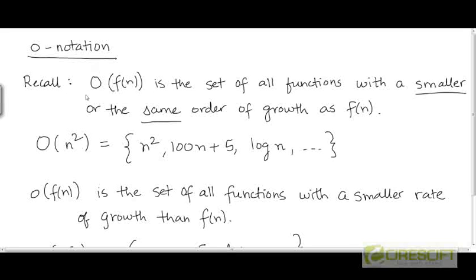Recall that big-O was defined to be the set of all functions with either a smaller or the same order of growth as the function f. For example, big-O(n) is the set of all functions with a smaller or the same rate of growth as n. So it contains functions like 2n, 3n, 10n, ½n, and so on — these are all functions which have the same rate of growth as n, which is why they belong to the set big-O(n).